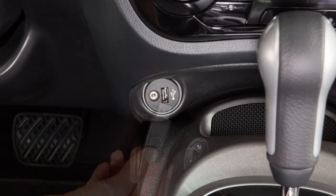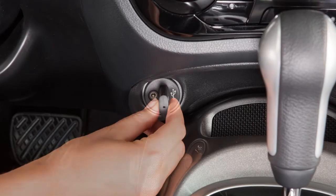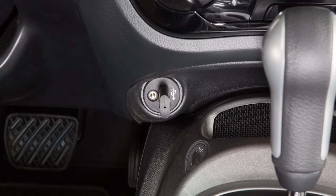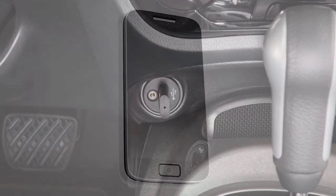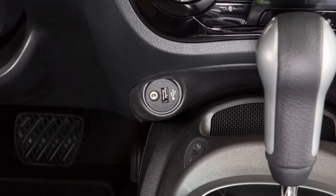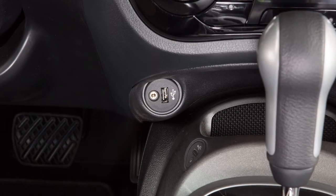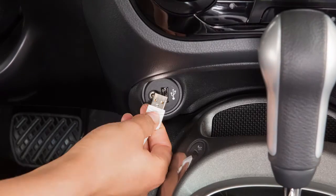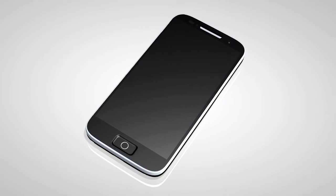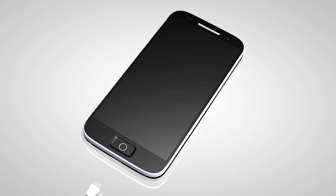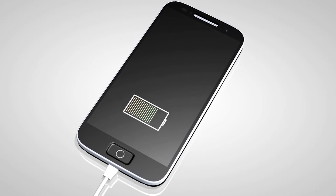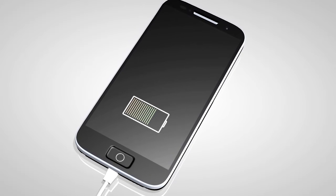Plug a compatible storage device into the jack to play compressed audio files stored on the device. To use an iPod with the audio system, connect the cable supplied with your iPod to the USB jack, then connect the other end of the cable to your iPod. If compatible, the battery of your iPod will charge while connected to the vehicle.